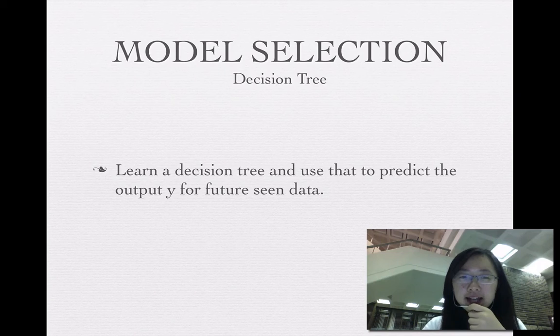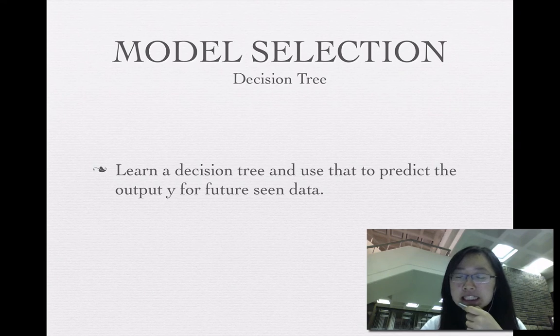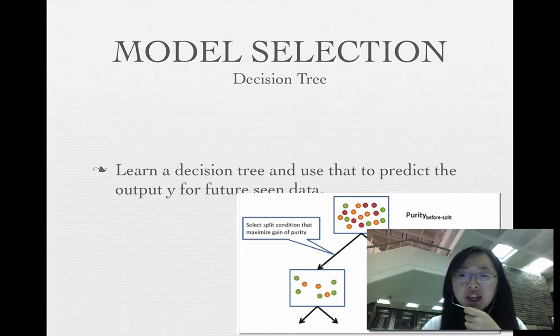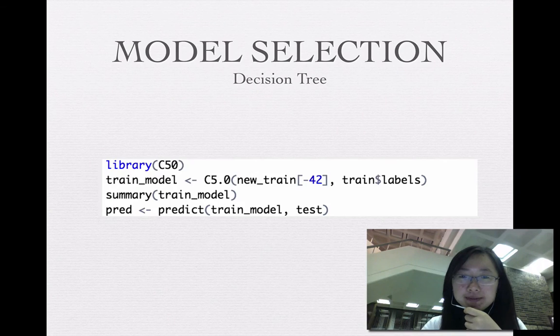I used the decision tree. It learns the decision tree and uses that to predict the output Y for future unseen data. This picture shows how I used the decision tree. This is the code I write to do experiments.